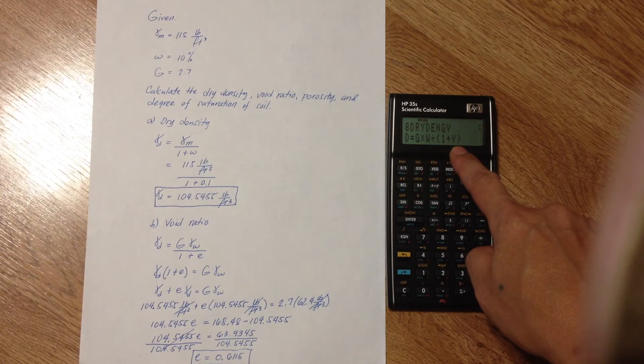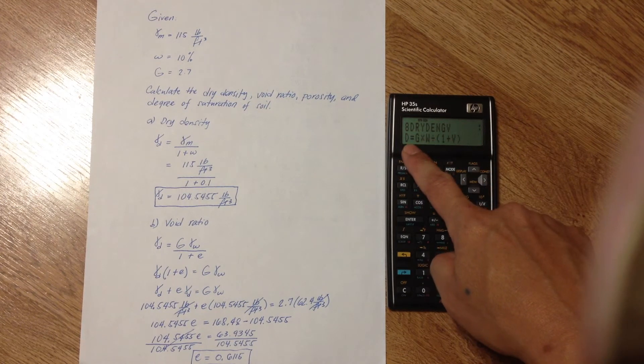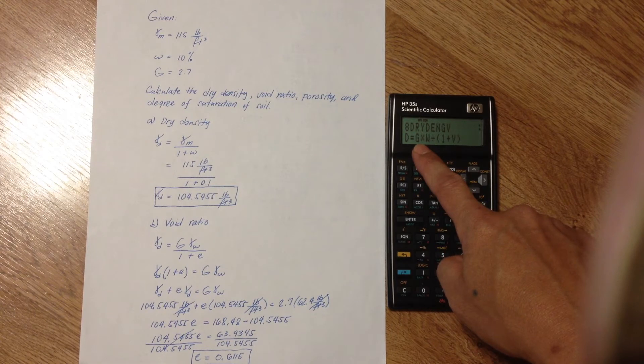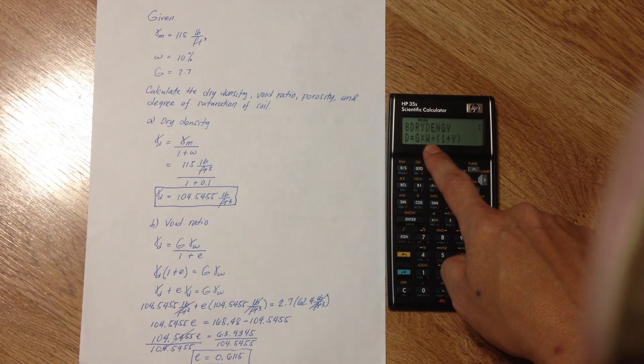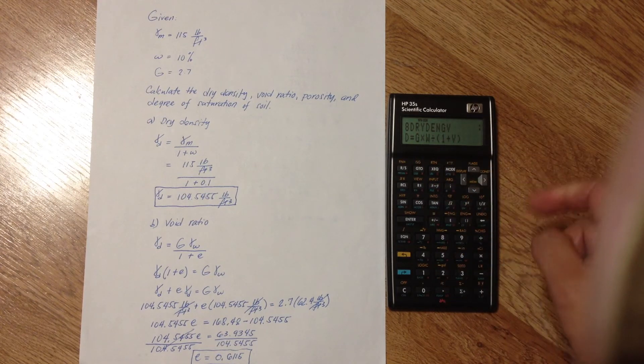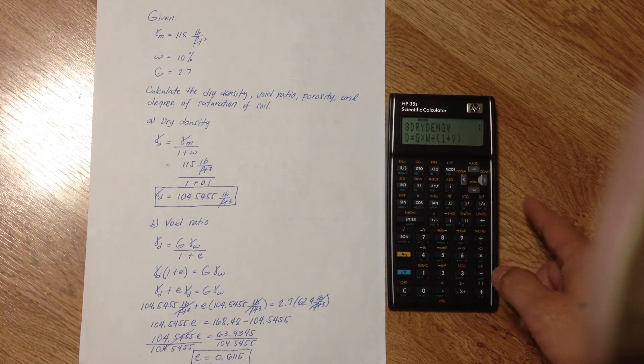Equation number 8 is dry density with specific gravity and void ratio. Now, the only unknown here is the void ratio. We've already calculated the dry density. Specific gravity is given, and we know the unit weight of water, which is 62.4 pounds per cubic foot.